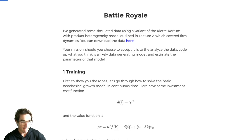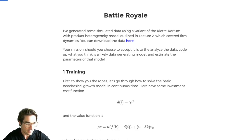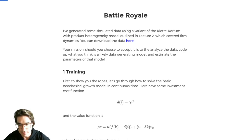Essentially what the data has is: each row is a firm ID and a year, so it's annual data. Then firm characteristics: revenue for that year, employment, number of employees, how much they're paying in wages — wages are the only cost, there's no capital — profits, which you can compute from that, and R&D spending.